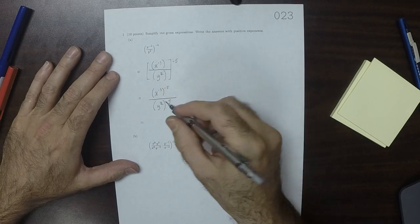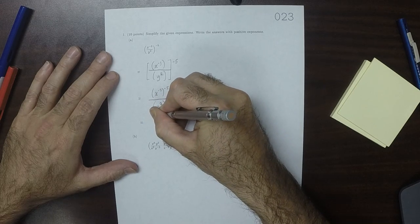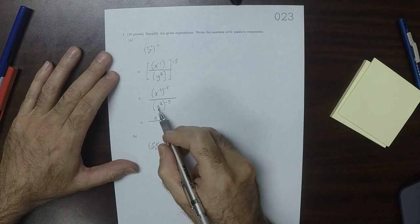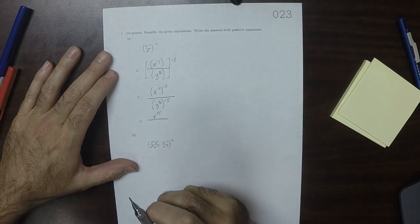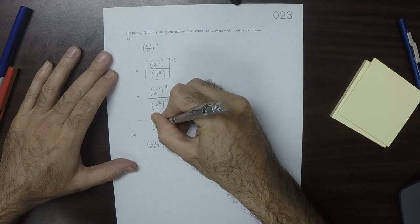Carrying that out, the product of negative 3 and negative 5 is 15, so that would be x to 15. And then divided by the product of 2 and negative 5 is negative 10, so y to negative 10.